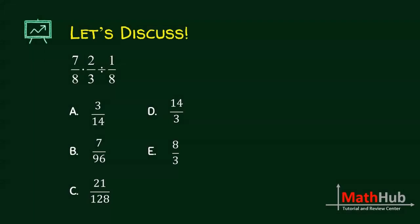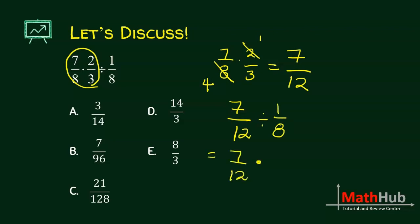In this example, we have order of operations, multiplication and division. But since they are tied up, you just perform whichever comes first. So we perform the multiplication first. 7 eighths times 2 thirds. 2 and 8, common factor of 8, becomes 1 and 4. So we have 7 times 1 is 7, 4 times 3 is 12. This part now becomes 7 over 12, and then we divide by 1 eighth. Division becomes multiplication and get the reciprocal. 7 times 2 is 14, 3 times 1 is 3. The answer is letter D.